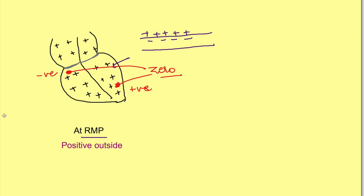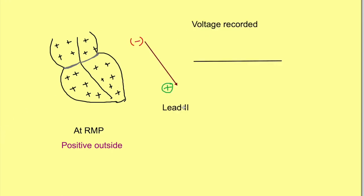Let us take an example of lead 2, whose direction is like this — the back end being negative and the arrow representing the positive end. This lead 2 will record zero potential when the cells are at resting membrane potential. We will focus just on the ventricles here, since we will be talking about current of injury with respect to ventricles. So at resting membrane potential, a straight line or zero potential is recorded.